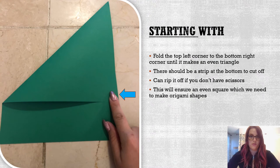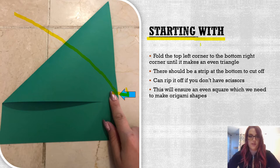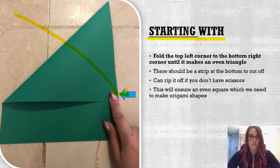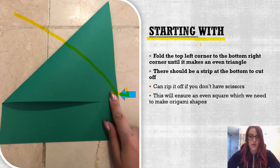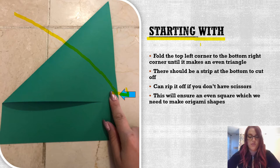Starting with the fold on the top left, fold it down to the bottom right where the blue arrow and my finger is, until it makes an even triangle. There should be a strip of paper left on the bottom — rip it off if you don't have scissors. This ensures we have an even square, which we need to make origami shapes. Without an exact square, the folds will have a lot of leftover paper and won't turn into the shape we want.